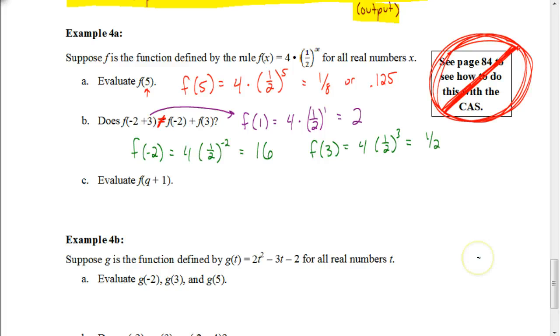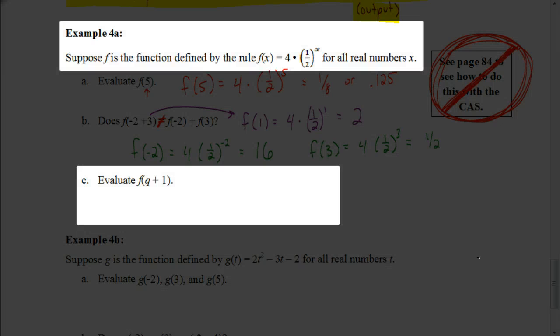And to evaluate, to do this last one, F of Q plus 1, what we're going to do is we're going to put Q plus 1. That's going to be my input value. I'm going to put that in for X. So, I would just write this as 4 times 1 half, and then Q plus 1 is my exponent. And there's nothing I can do to simplify that, so that would be my answer.